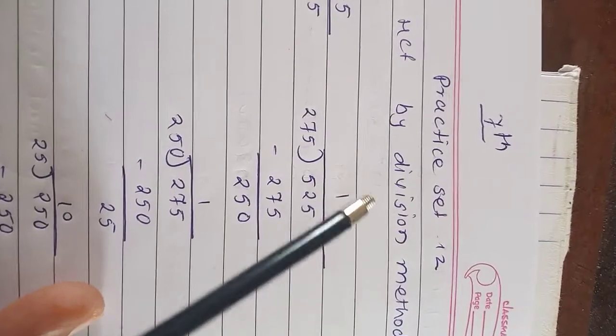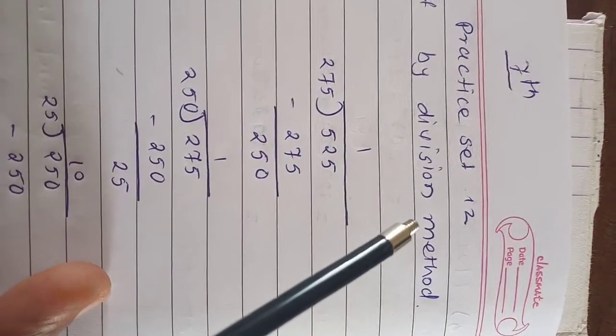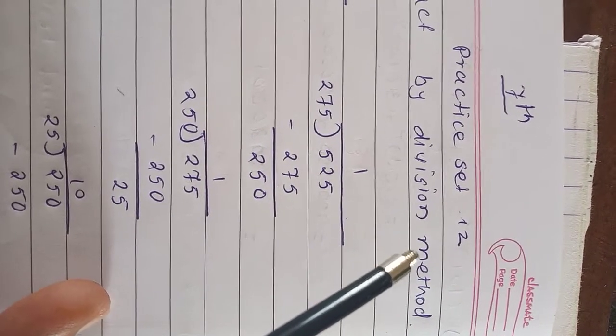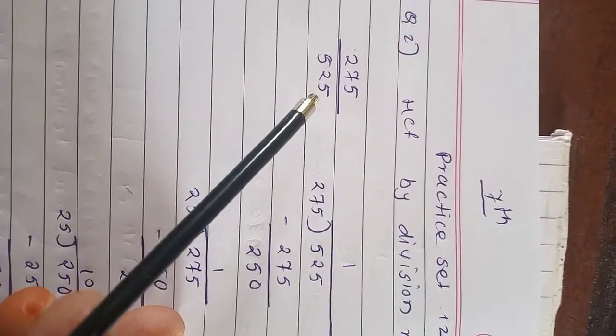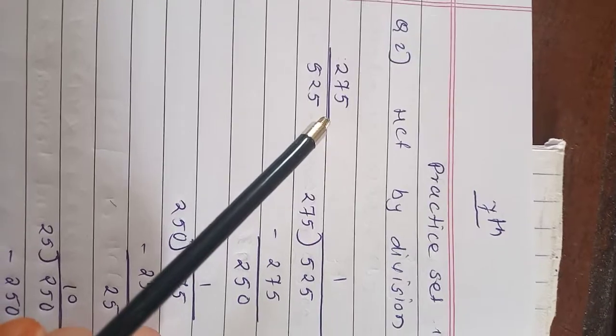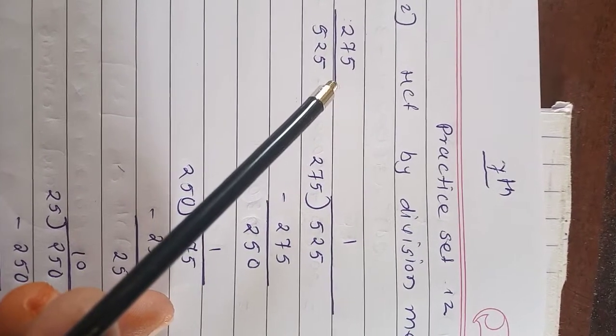So by doing the division we have to find the HCF, highest common factor of the given numbers. Now see practice set 12, question number 2, HCF by division method.